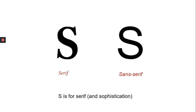What makes the difference? The answer is serifs. Serifs are the small lines or strokes that are attached to the end of a letter. The first letter S is clearly more sophisticated than the second one. The second one is known as sans serif, where sans means without.